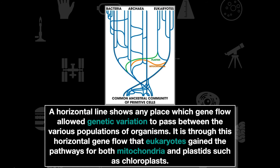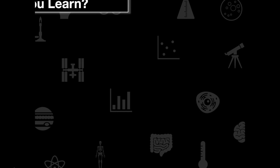Looking at the tree of life, horizontal lines represent places where gene flow allowed genetic variation to pass between populations. It is through this horizontal gene flow that eukaryotes gained the pathways for both mitochondria and plastids such as chloroplasts. These horizontal gene flow events had a major impact on the tree of life and how organisms evolved overall.